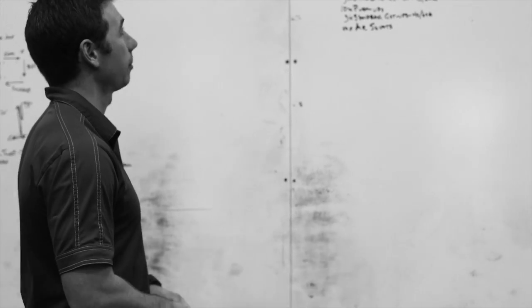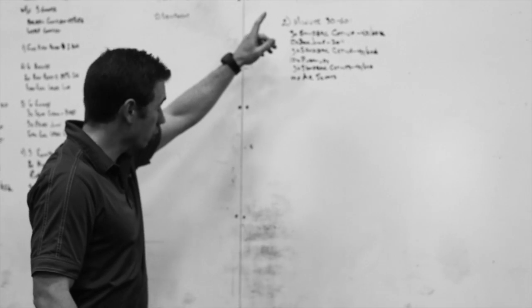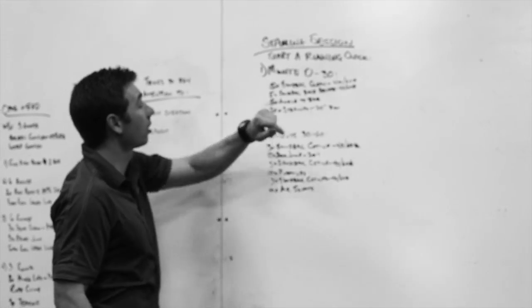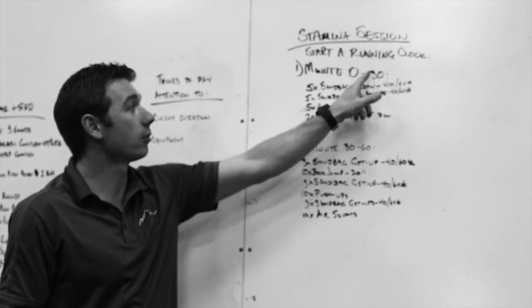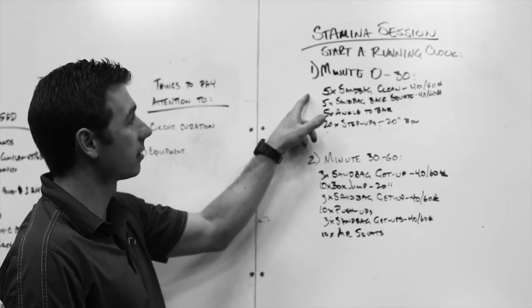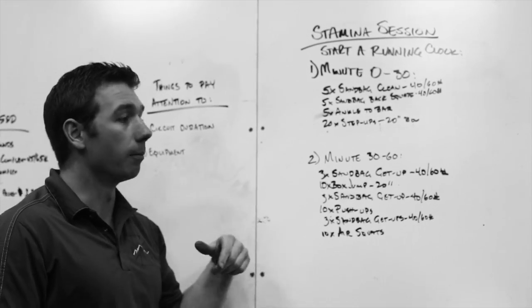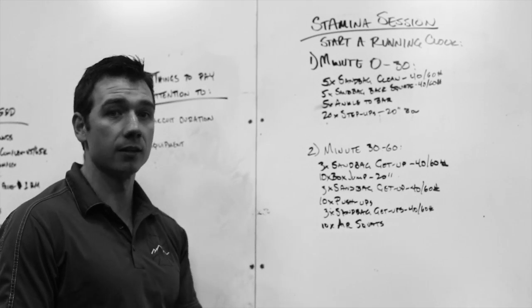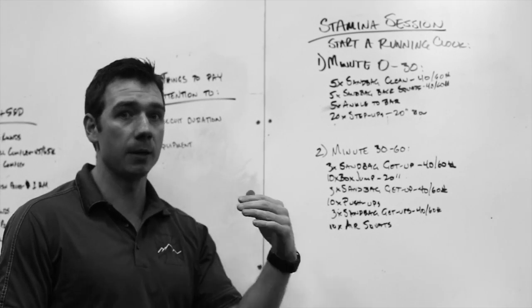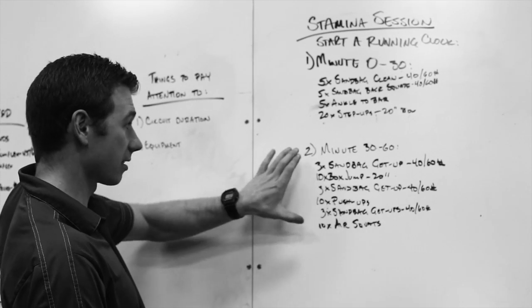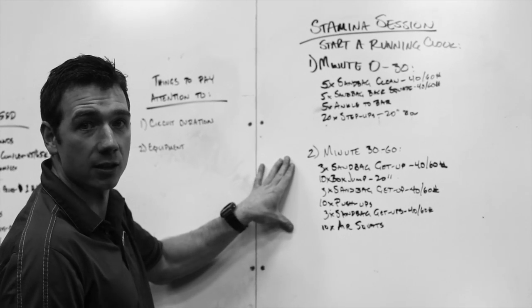Right now let's just look at this first example here where you'll start out by starting a running clock and then for minutes 0 to 30, so for the first 30 minutes, you'll do these four movements as many times as you can. Now when I say that, you're not going to be sprinting really hard because you've got another 30 minutes to do.